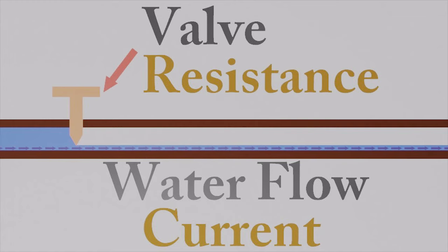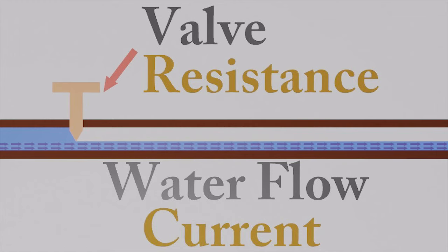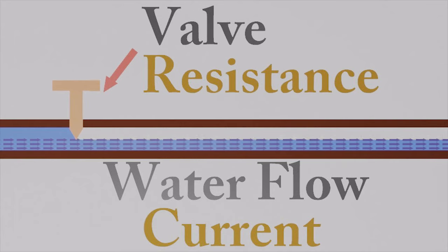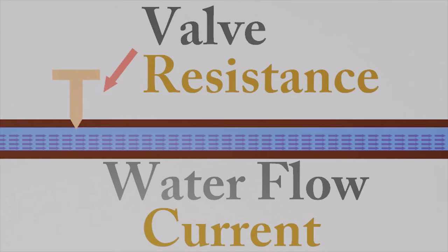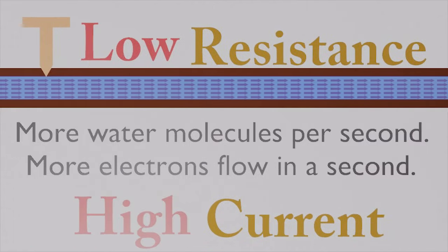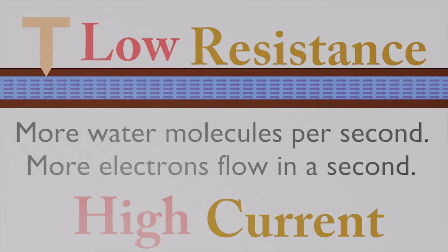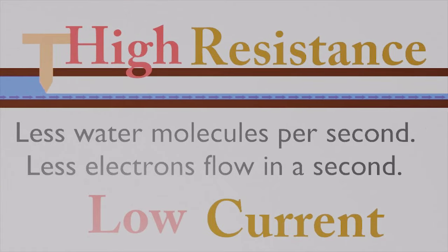Let's open the valve further. We are reducing the resistance, which allows more electrons to flow — a high current. Now let's close the valve a little bit. The water is still moving, meaning electrons are still moving. We are increasing the resistance, which reduces the water flow, also known as electron flow. An increase of resistance causes a decrease of current.